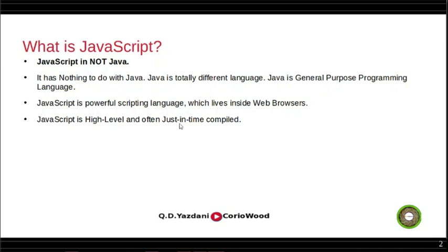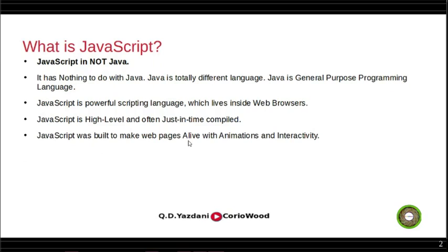Google introduced the V8 engine in 2008 with Chrome — it's very powerful and compiles JavaScript just-in-time. I'll show you what just-in-time means in future videos. JavaScript was built to make web pages alive with animation and interactivity. Back in the 1990s, around 1993, there were only about 300 websites — very static, slow-loading pages with no animation. With the arrival of JavaScript, animation and interactivity became possible. YouTube used JavaScript for video playback for a very long time.